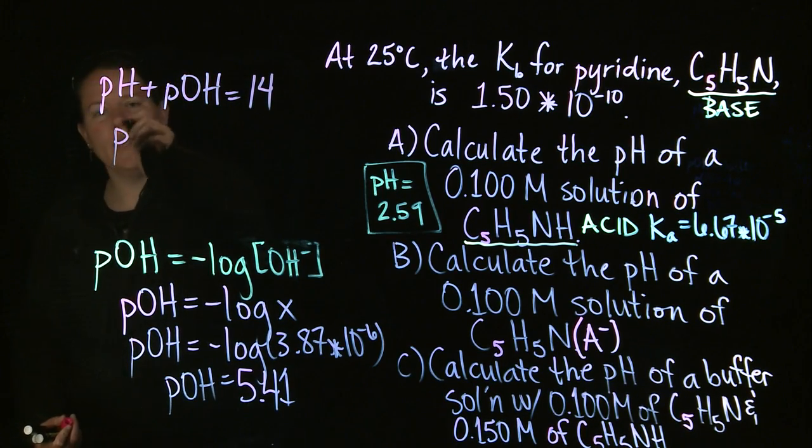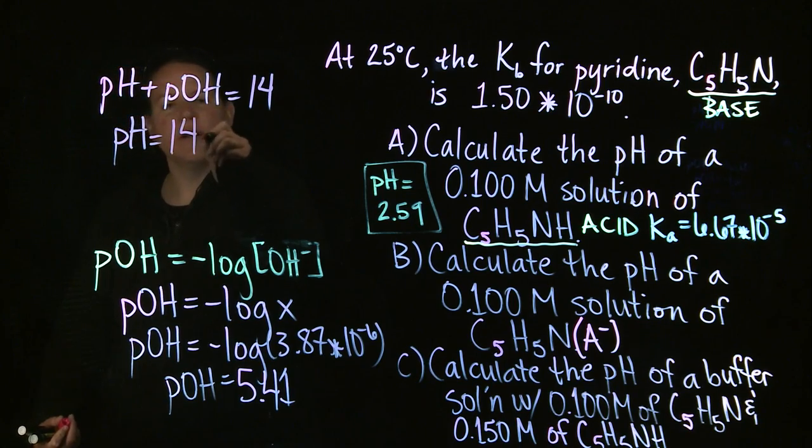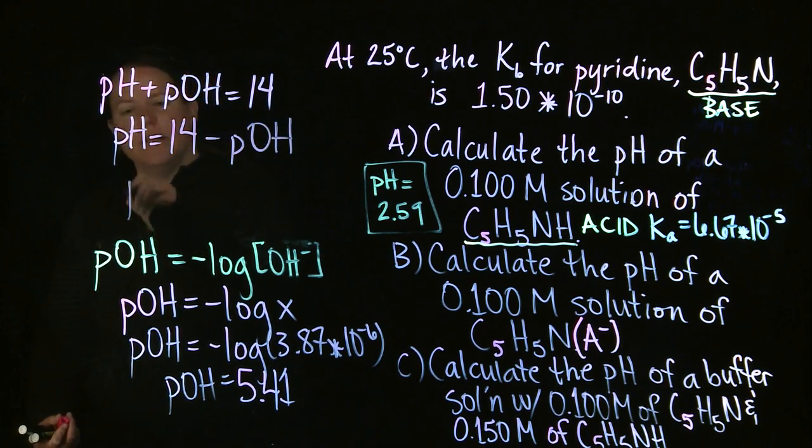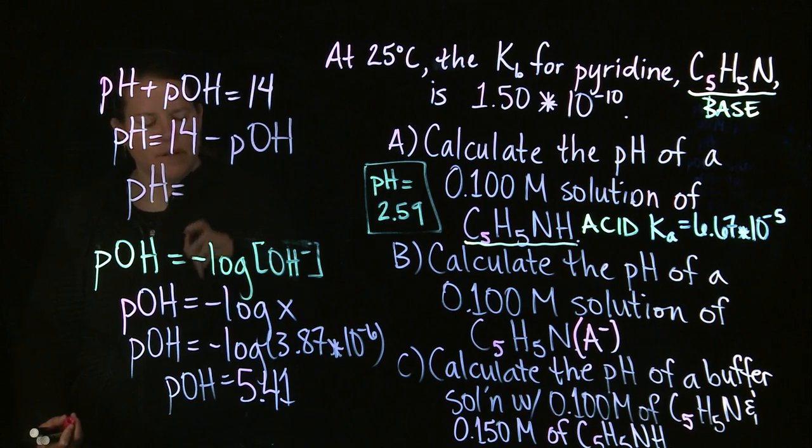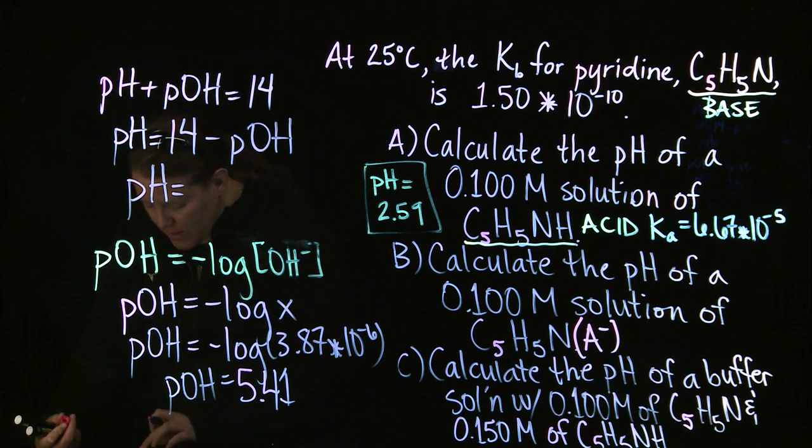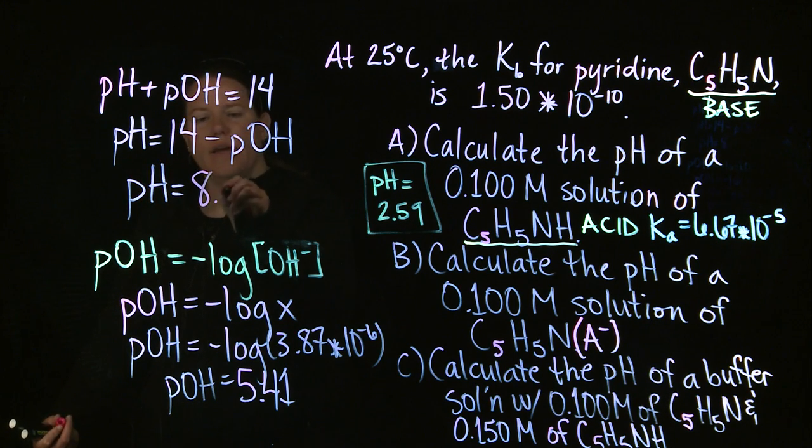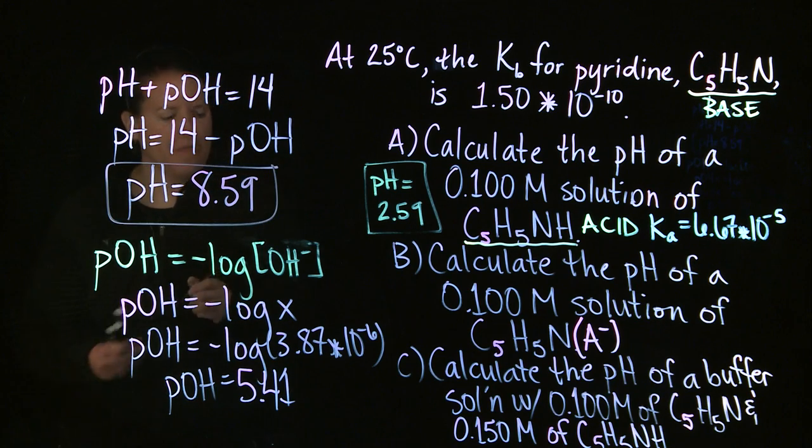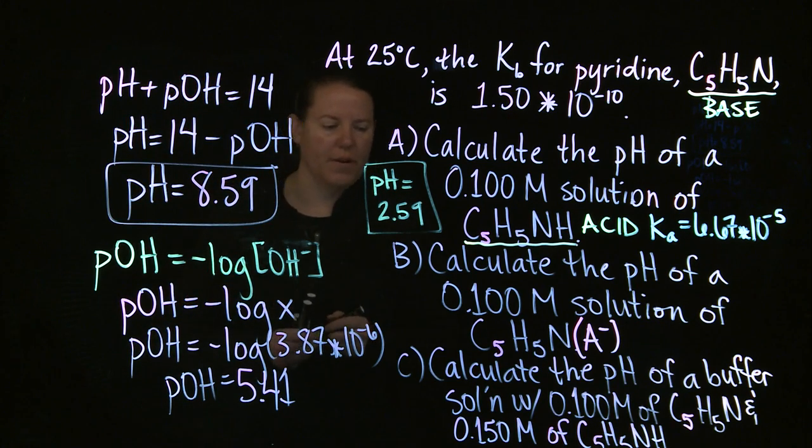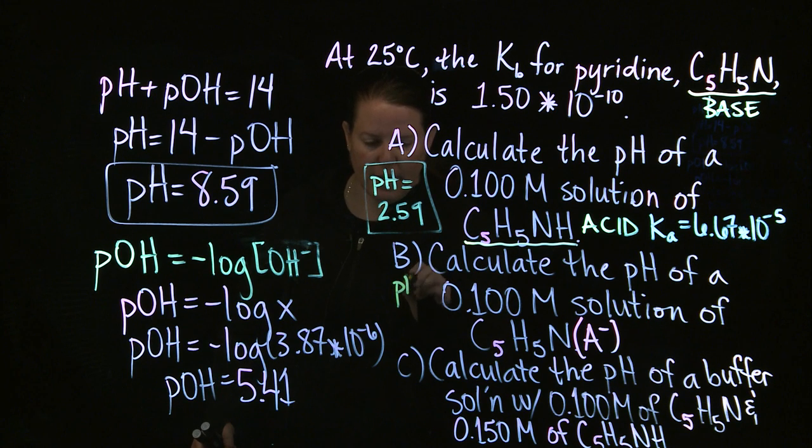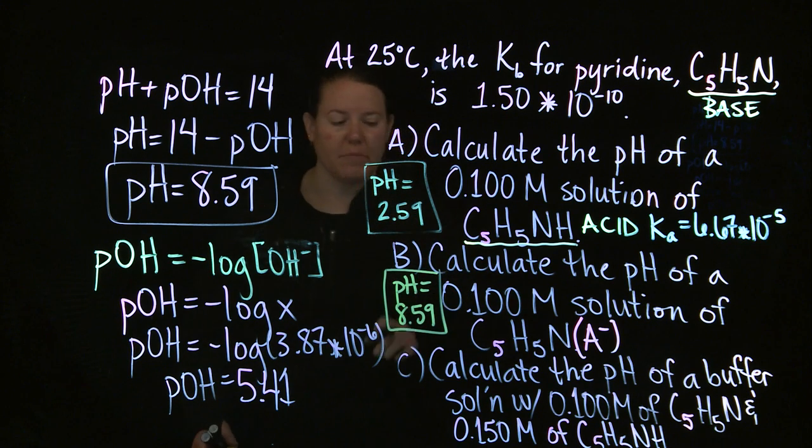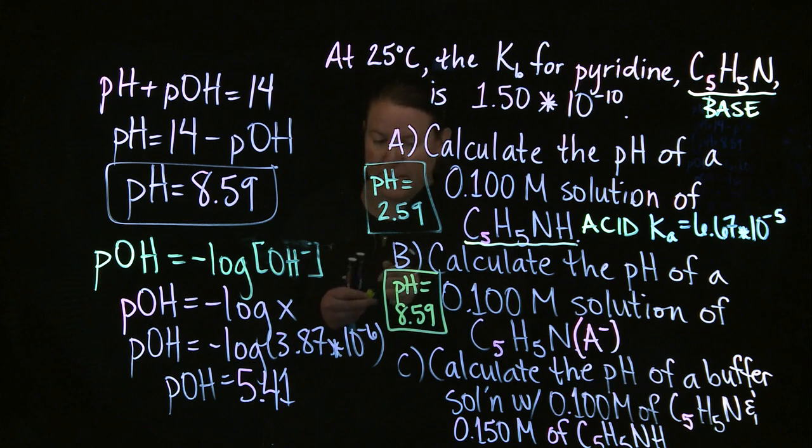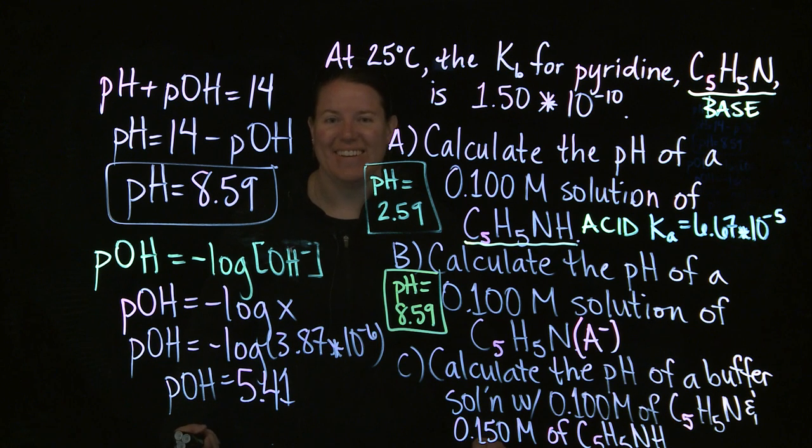So if I want the P-H, all that I have to do is subtract the P-OH from 14. And so the P-H here is going to be 14 minus 5.41. And you get a cool number like 8.59. And that's our answer that we're going to put over here. P-H equals 8.59. And we expect this to be basic because this is a basic solution. All right, until next time, we'll do part C. Adieu.